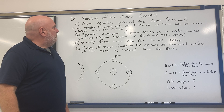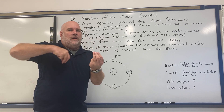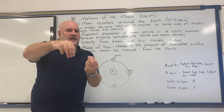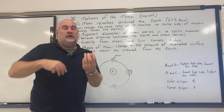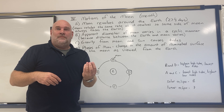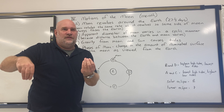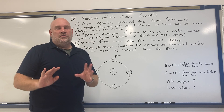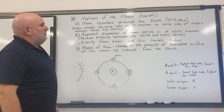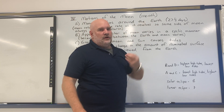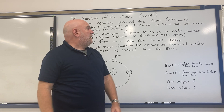The moon basically revolves around the Earth. They actually revolve a little bit around each other, but since the Earth is a lot more massive than the moon, the moon is more so going around the Earth. We'll just say the moon revolves around the Earth, and it takes 27 and a third days for the moon to go around the Earth once.